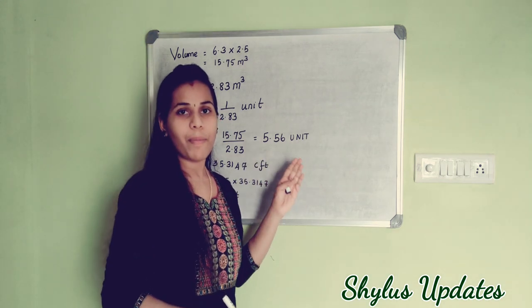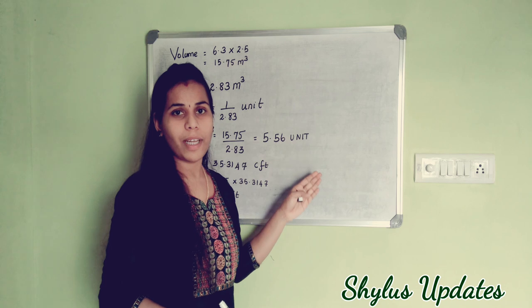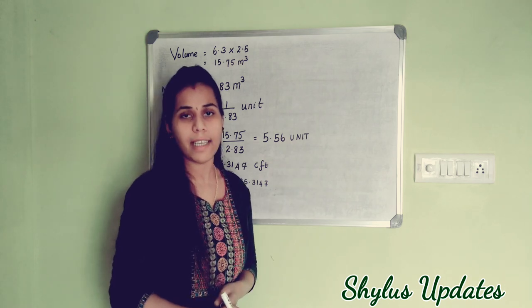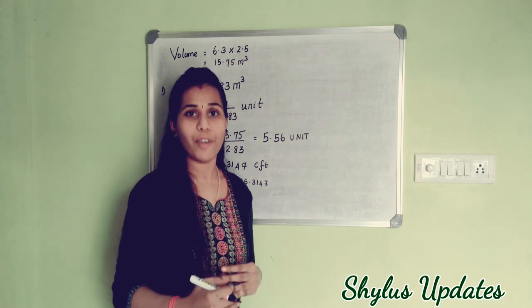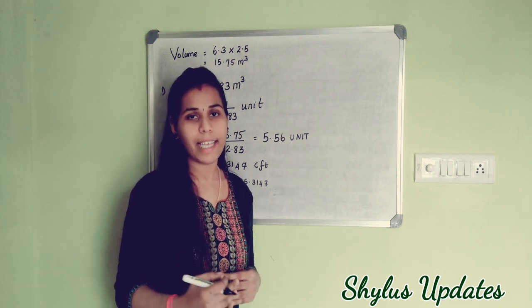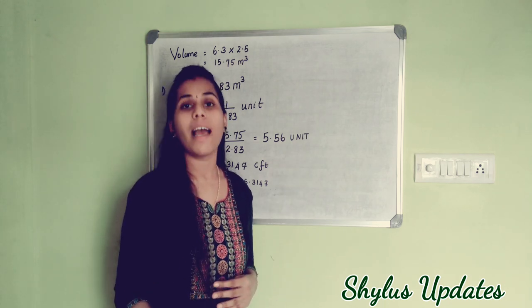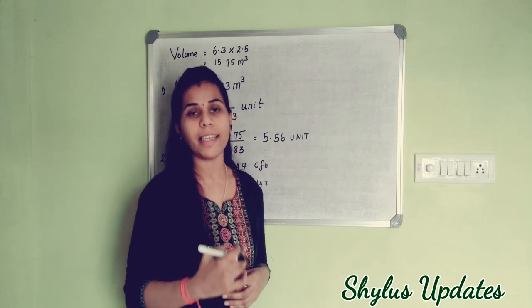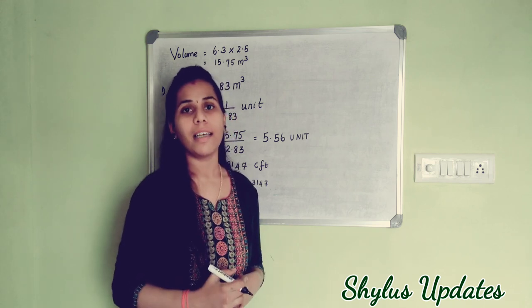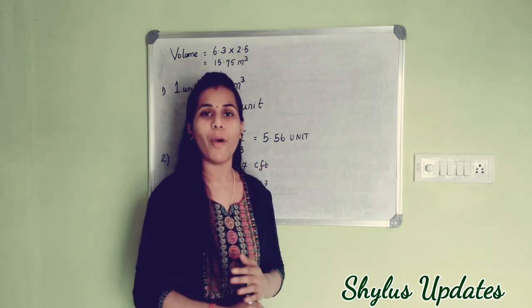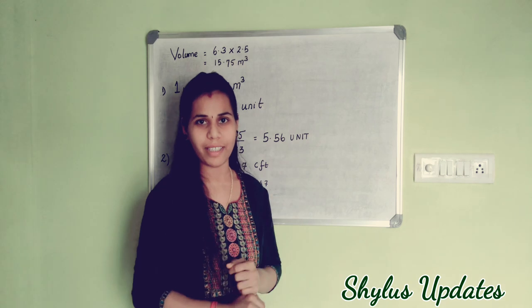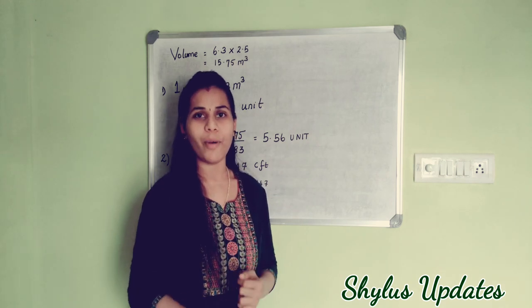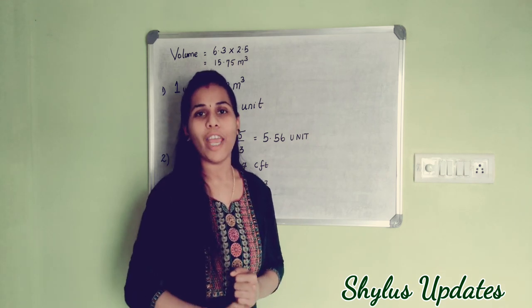At site, engineers would say, for example, '5.56 units of sand has come to the site.' This is how they use the unit measurement at site. If you want this unit conversion reference, check the link given above and also in the description box.